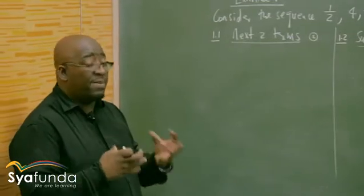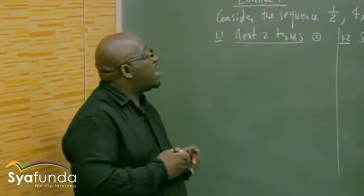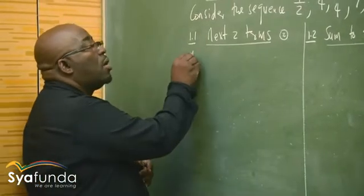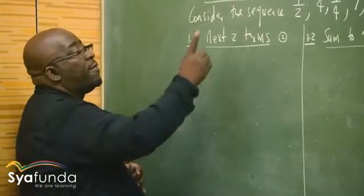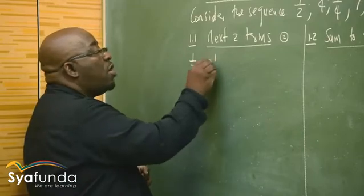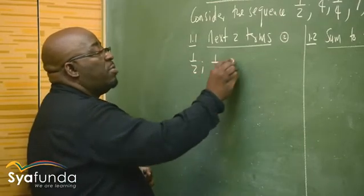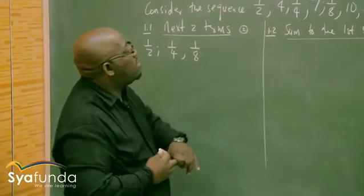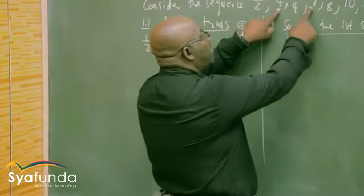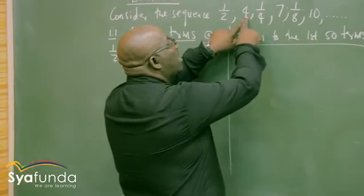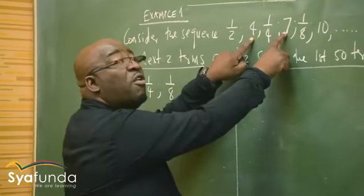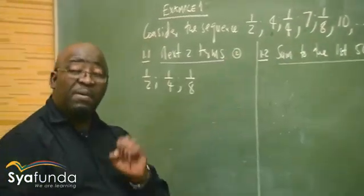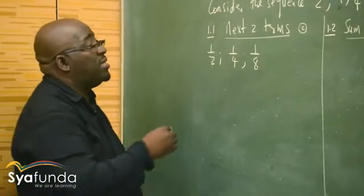You must be able to separate them. In this particular case, we can see that we've got 1/2, the next one would be 1/4, the next one would be 1/8. Look at the other ones: 4, 7, and 10. Four plus three gives us seven. Seven plus three gives us ten. That three becomes our common difference in that particular case.